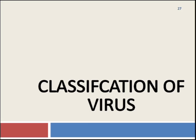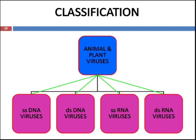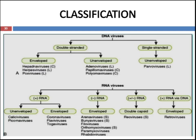Now coming to the classification of virus. Viruses are mainly classified into plant viruses and animal viruses. Animal and plant viruses are further divided into single-stranded DNA viruses, double-stranded DNA viruses, single-stranded RNA viruses, and double-stranded RNA viruses. Double-stranded DNA viruses are divided into enveloped and non-enveloped viruses. Non-enveloped double-stranded DNA viruses include Herpesviruses and Poxviruses, while examples of non-enveloped double-stranded DNA viruses are adenoviruses, papillomaviruses, and polyomaviruses. An example of unenveloped single-stranded DNA viruses is parvoviruses.